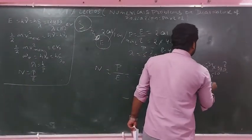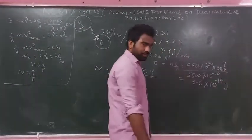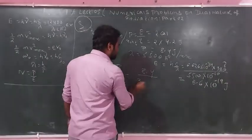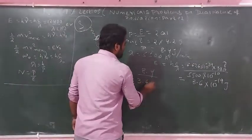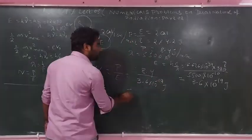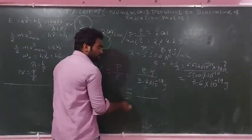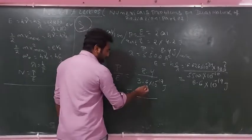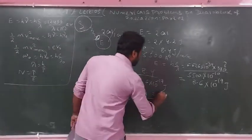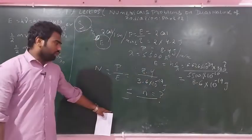The energy of one photon calculates to 3.6×10⁻¹⁹ joules. Now calculate the number of photons N using N = energy absorbed / energy per photon. Divide 8.4 by 3.6×10⁻¹⁹ to get the number of photons received per centimetre square per minute.